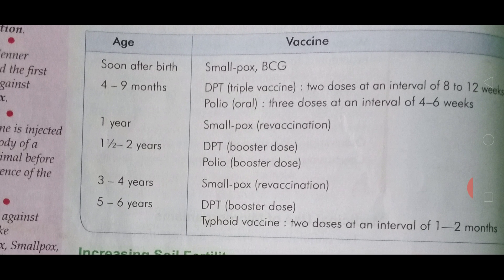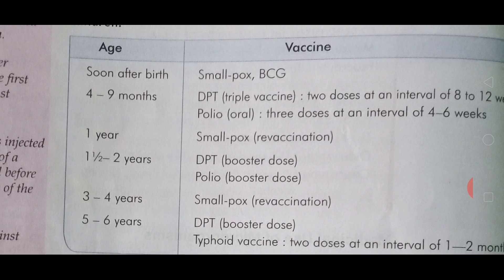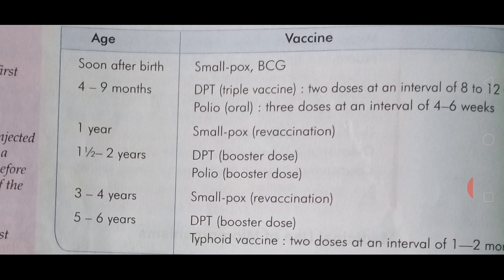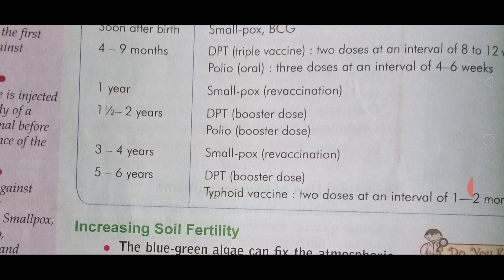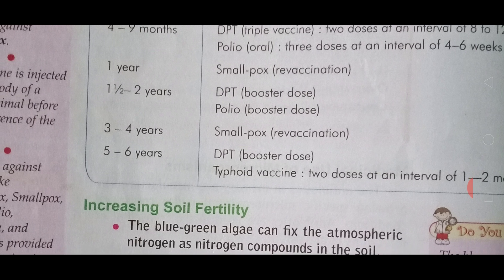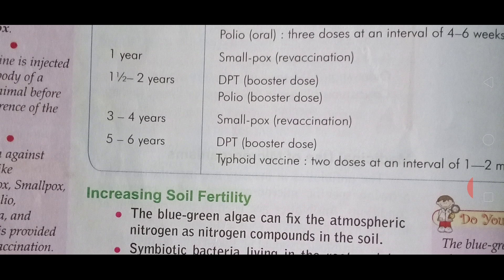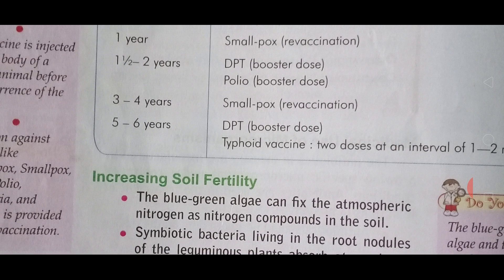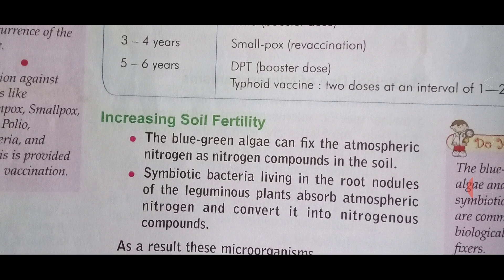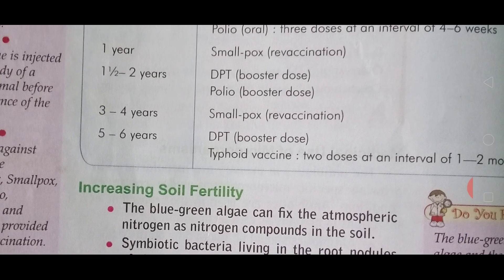Which vaccines are recommended for immunization? Soon after birth: smallpox and BCG vaccine. At four to nine months: DPT triple vaccine. At one year: smallpox vaccination. At one and a half to two years: DPT vaccine booster dose and polio booster dose. At three to four years: smallpox, third vaccine. At five to six years: DPT and typhoid vaccine. These vaccines are given to children to increase immunization.